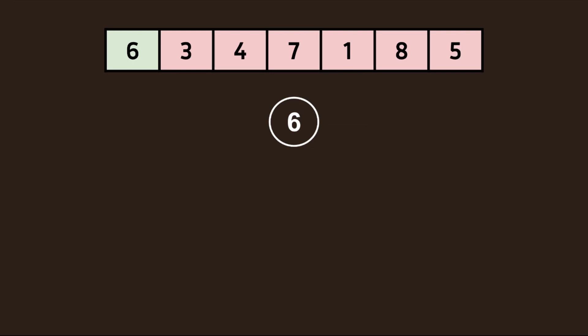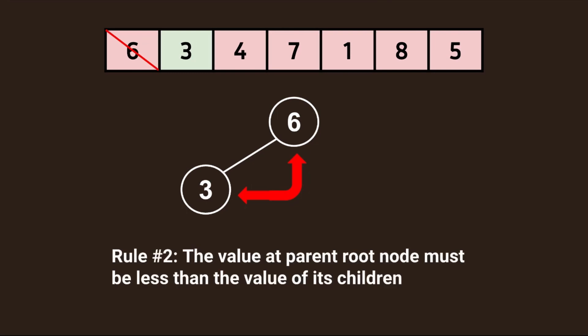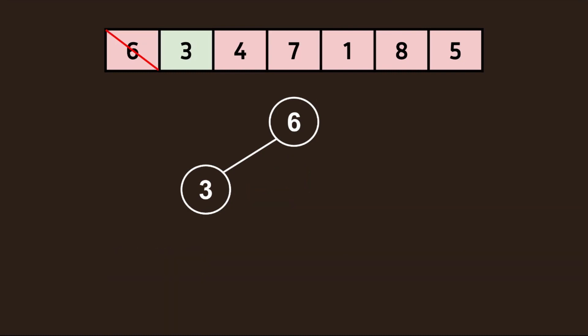We don't have any conditions to check right now, so let's take a look at the next value in our array, which is 3. Remembering our first rule, this node will be inserted to the left of the root. Let's take a look at this node and its parent. Remember rule number 2: the value at the parent node must be less than the value of its children. Since this condition hasn't been met, we need to perform a swap operation between the child and its parent. Now our root node is 3.